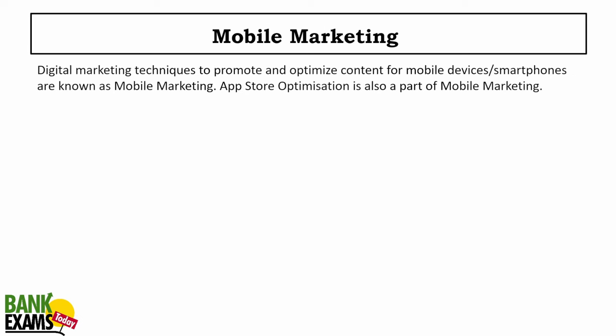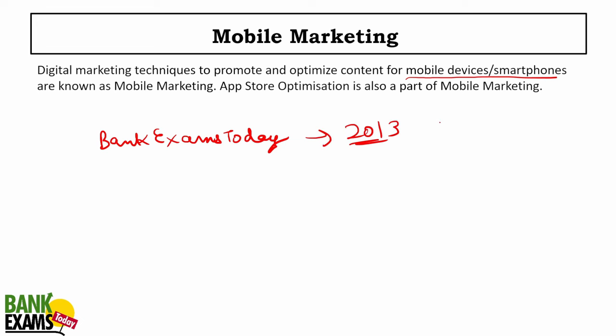Mobile marketing uses mobile channels to advertise products — you optimize content for mobile devices and smartphones. For example, bankexamstudy.com started as a blog in 2013 and eventually in 2018 launched an app because a lot of students were using mobile devices. That is mobile marketing.